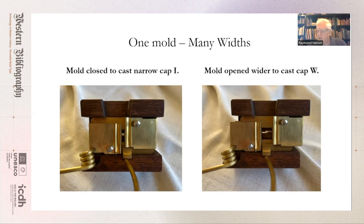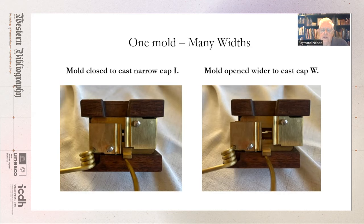You'll notice in this picture that the two halves of the mold can be brought tighter together and moved farther apart. Because it's adjustable, letters can be produced in an infinite range of widths, from I to W — the narrow I on the left, the W on the right. One mold will accommodate all of the written forms found in the Western alphabet. A single mold with its accompanying matrices will produce all of the letters in a font just by changing the matrix.